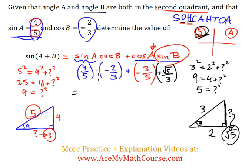Now we can evaluate all of this. We can just rather simplify it, that's what I meant. 4 times negative 2 is negative 8, 5 times 3 is 15. Then over here we have negative 3 times root 5, negative 3 root 5, all over 5 times 3, 15.